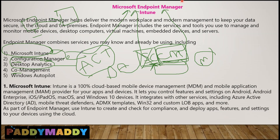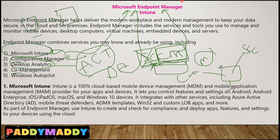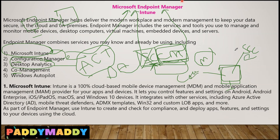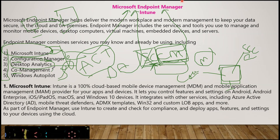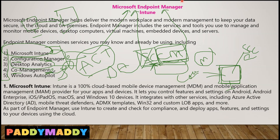Coming back to co-management: earlier, when you had Intune to manage mobile devices, you'd go for a hybrid configuration. That has been completely removed. Now, a single machine can have two agents - one from the ConfigMgr client and one from Intune enrollment. In that case, the machine can be co-managed, meaning it can be managed from two places. We'll learn more about this in the slides.